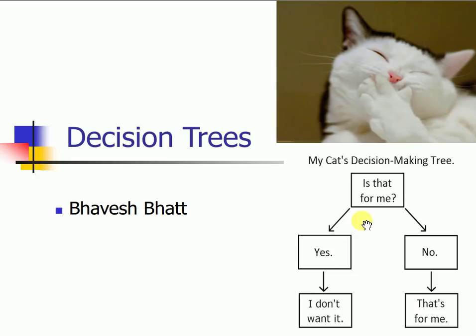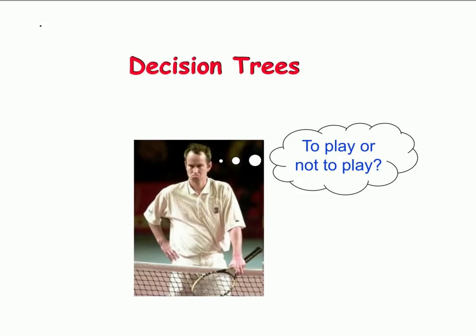Hi guys, this tutorial is aimed at teaching what a decision tree is. I have a very small problem in hand. I want to play tennis, but whether I go out and play or not depends on a lot of factors: whether it's raining today, is it humid? If it's humid, it's very difficult to play.